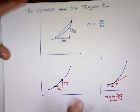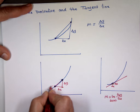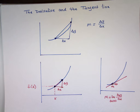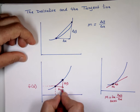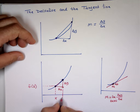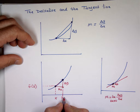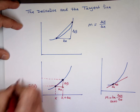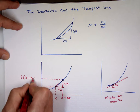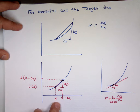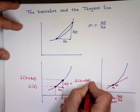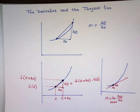Going back to the big picture: if I call this the x value, and the distance between the two points delta x, then the second x value is x plus delta x. The y value at x is f(x), and the y value at x plus delta x is f(x + Δx). So the change in y is f(x + Δx) minus f(x).